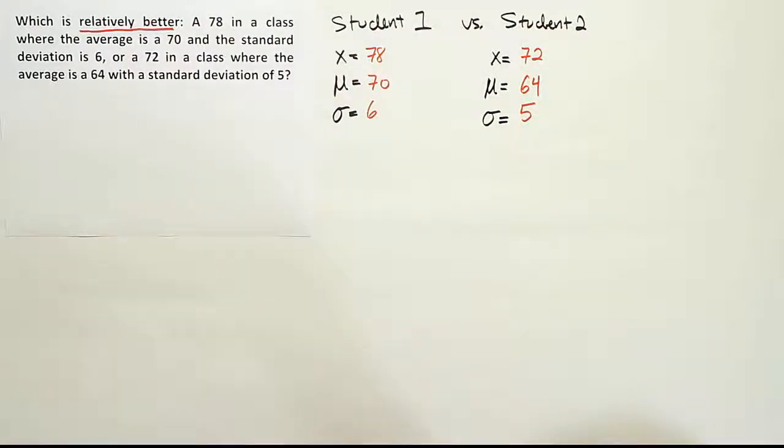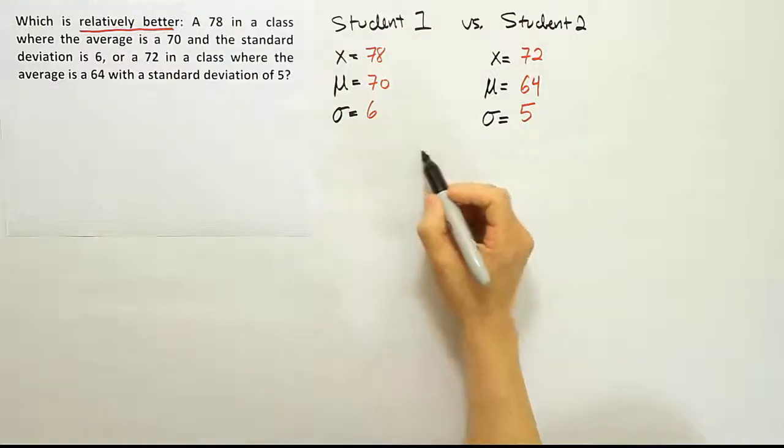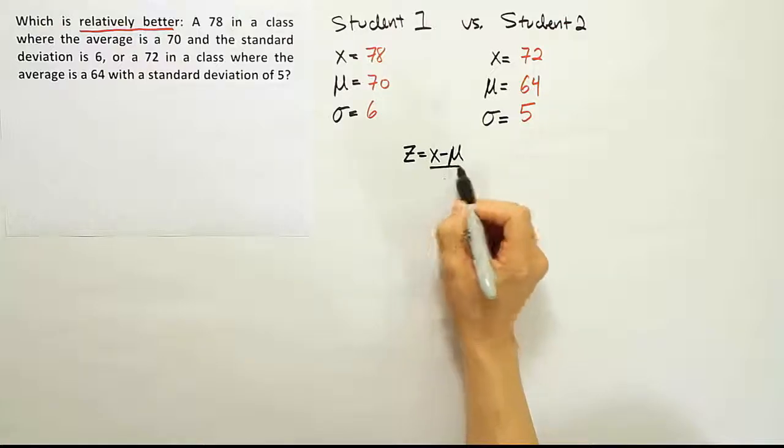Okay, now at this point we want to plug that information into the z-score formula, right? So remember, generically the z-score formula is x minus the mean over sigma. So let's use that formula twice.